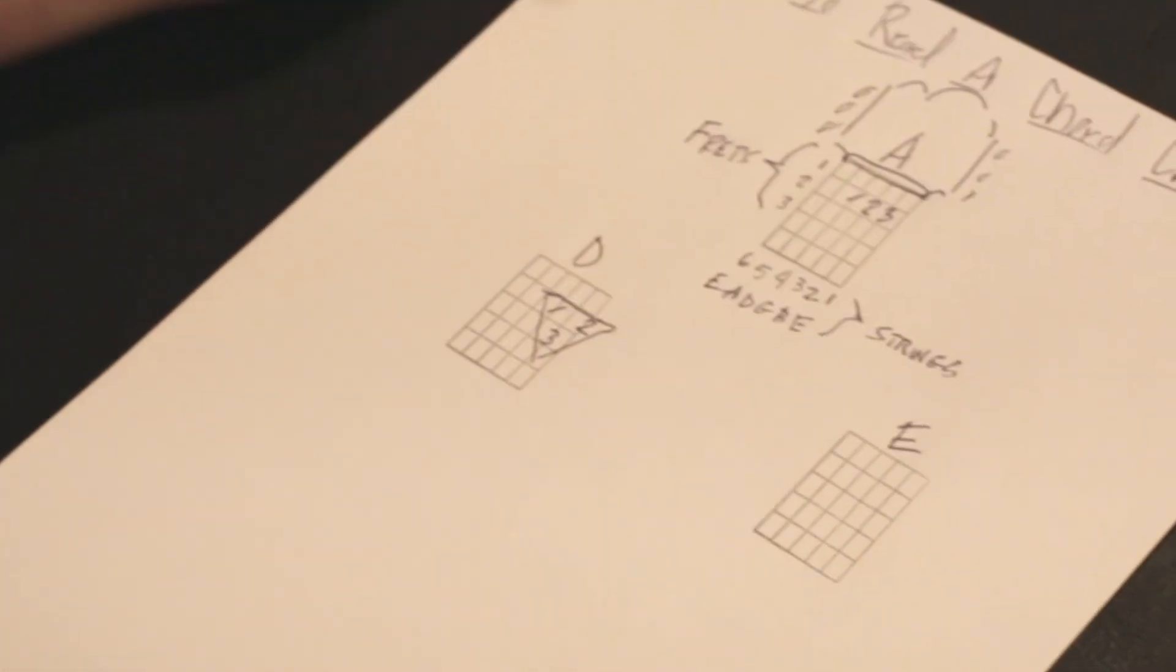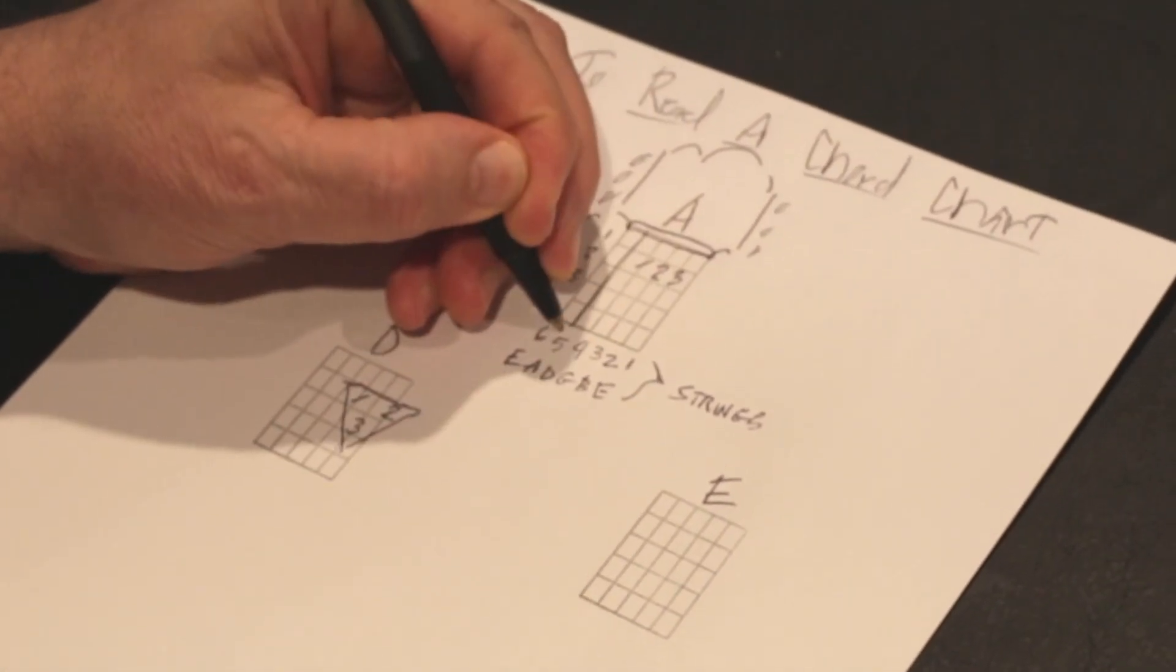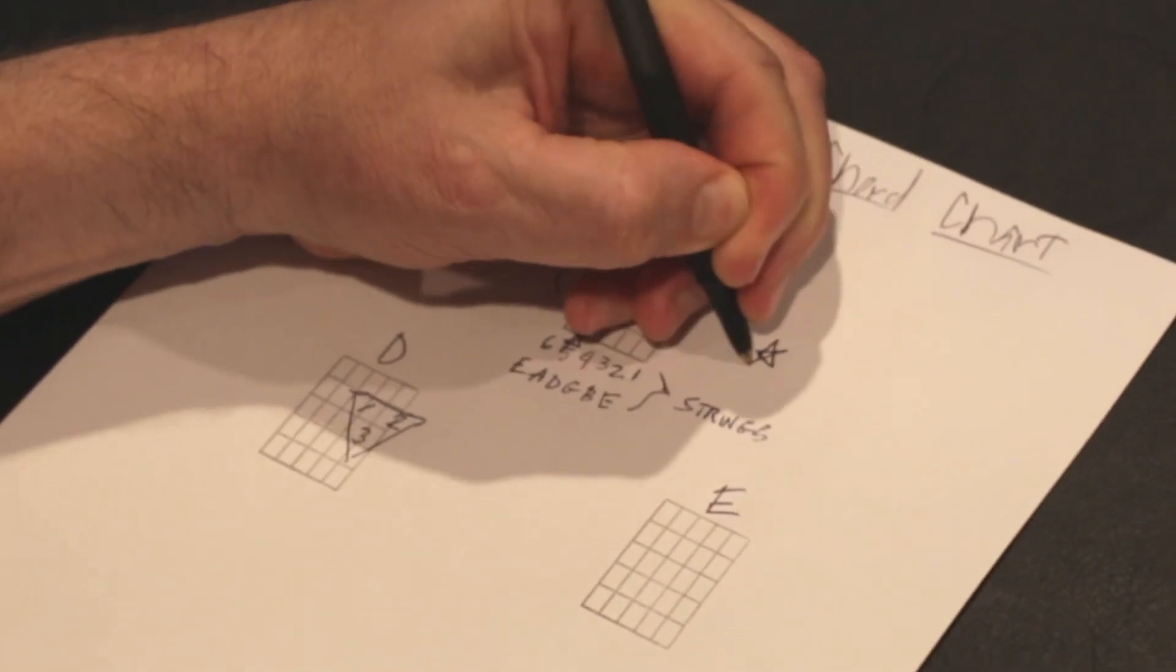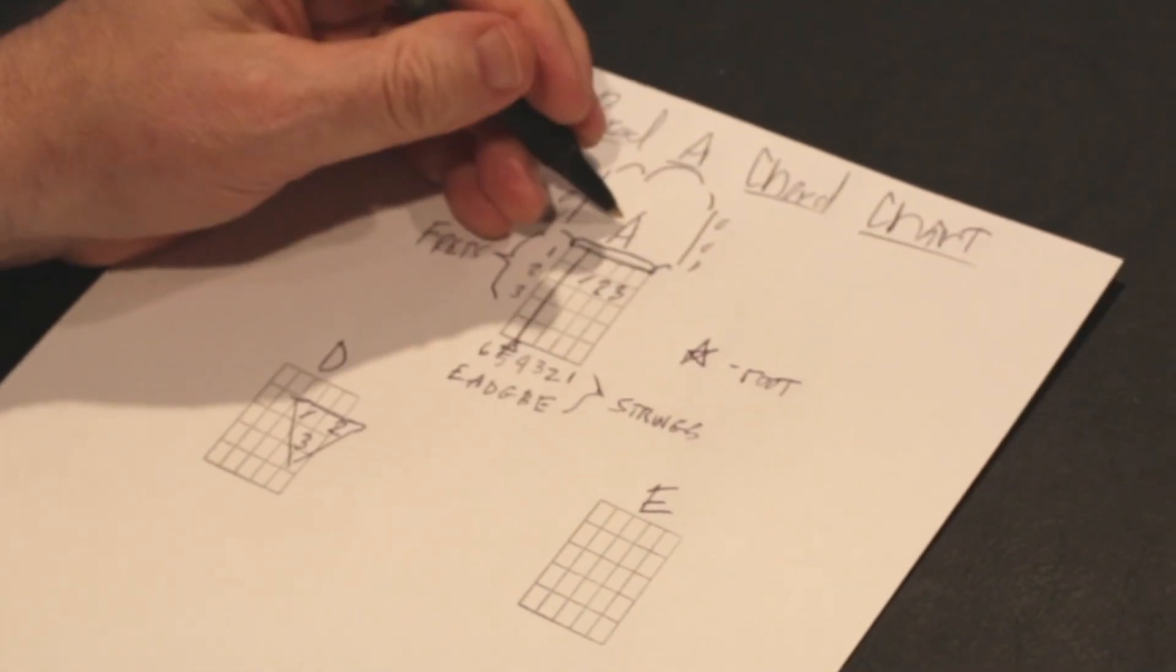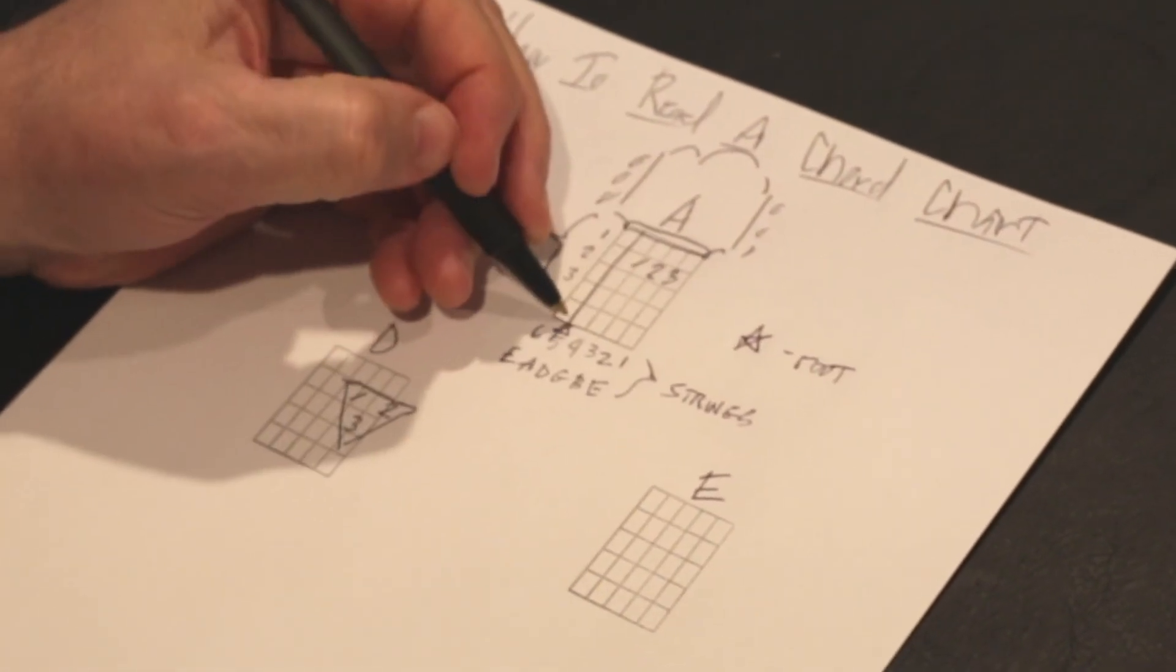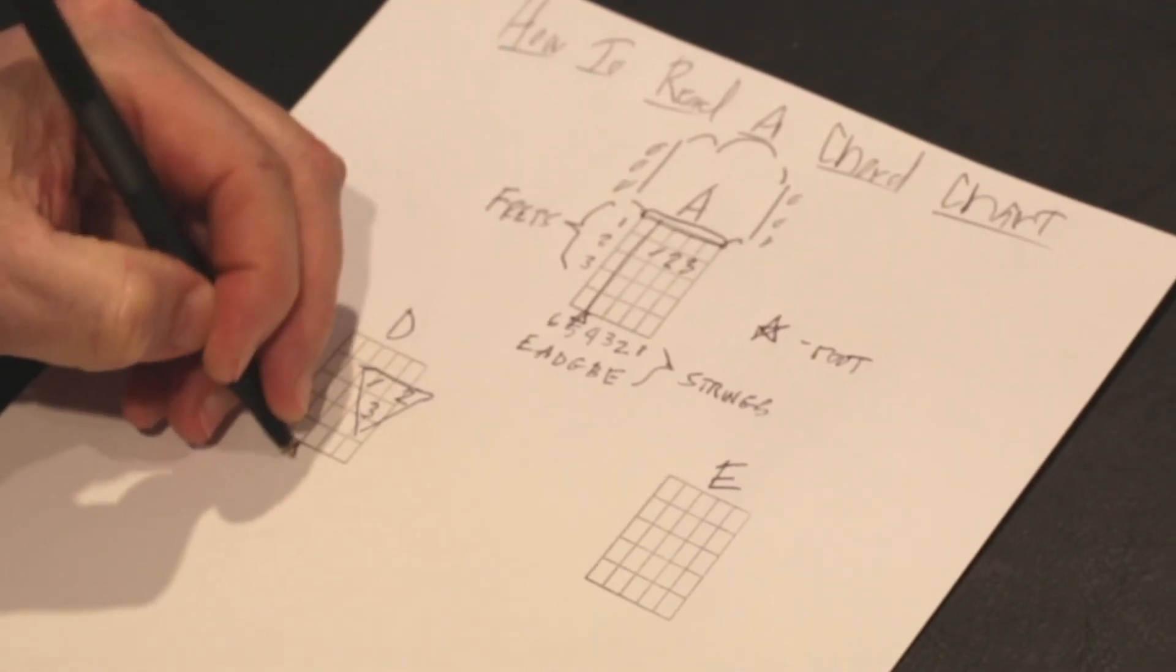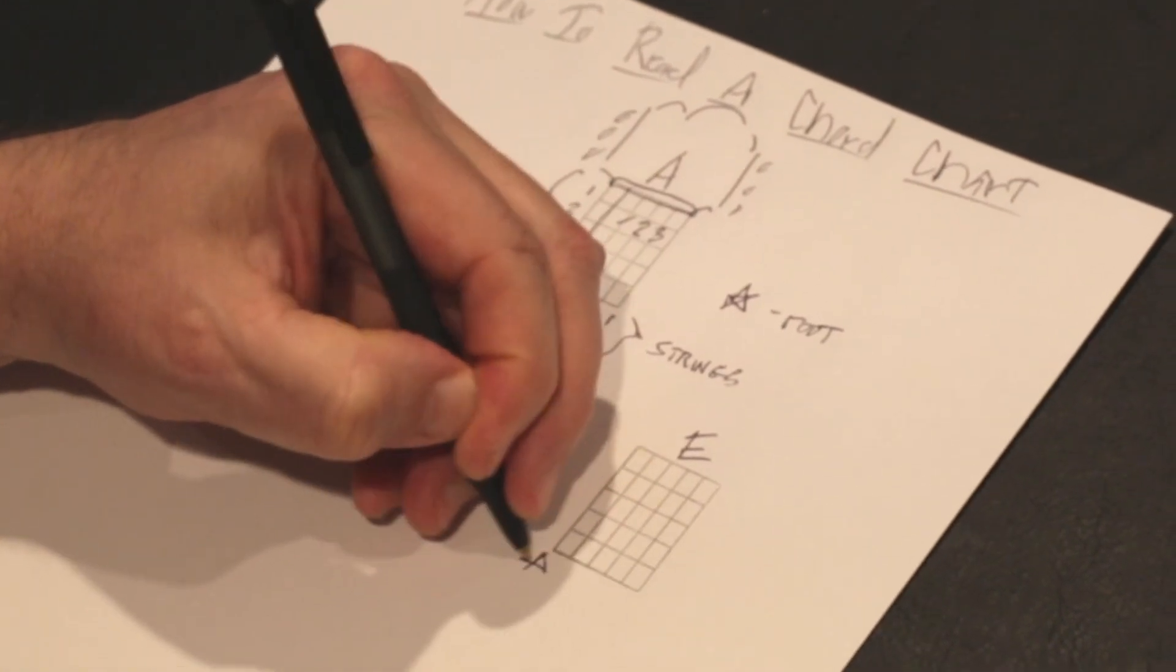And then E. And then I'm going to put a little star here to identify where the root string is, because here's my A string right here. And that little star represents the root of that chord, because that's an A chord with an A string. So when you strum, you strum down that direction. Here's my D, Elvis ate donuts. So there's my root there. And then here is my root for the E.